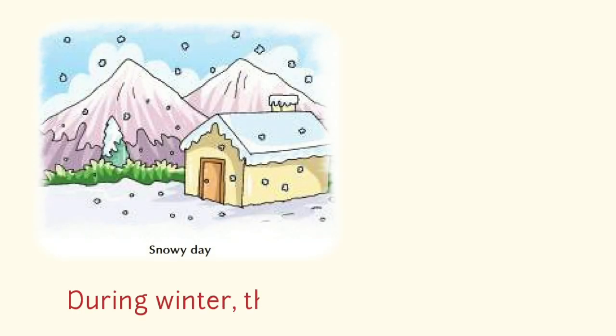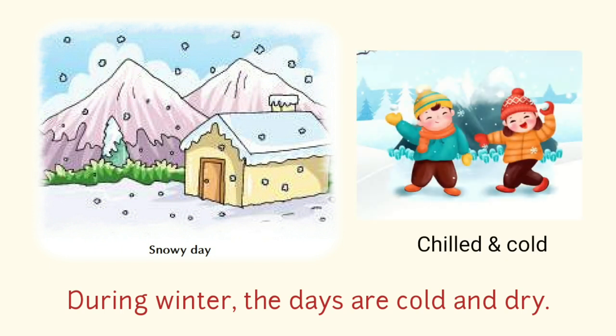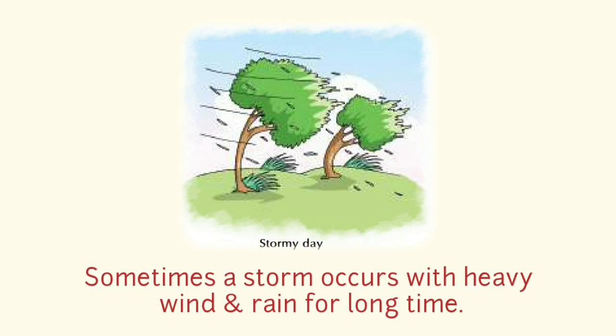During winter, the days are cold and dry. In hills and mountains, sometimes it snows, so it is called a snowy day. When it snows, it becomes very chilled and cold. Sometimes a storm occurs with heavy wind and rain for a long time. This is called a stormy day.